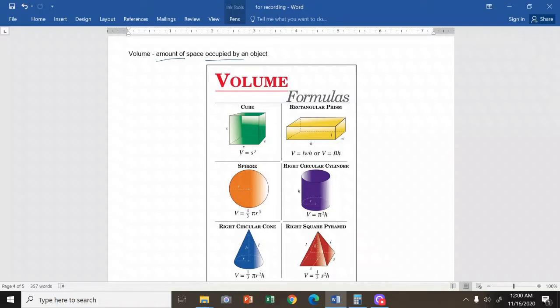I have here different formulas for three-dimensional objects such as the cube, the rectangular prism, the sphere, right circular cylinder, right circular cone, and right square pyramid. These are the common objects whose volume we measure.